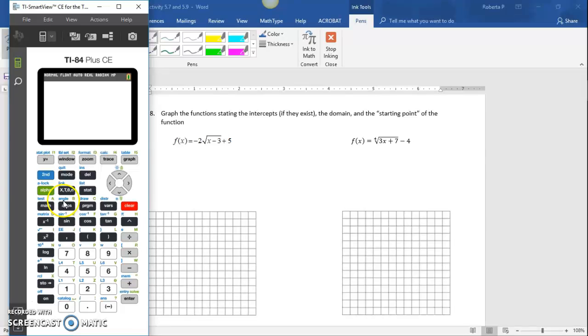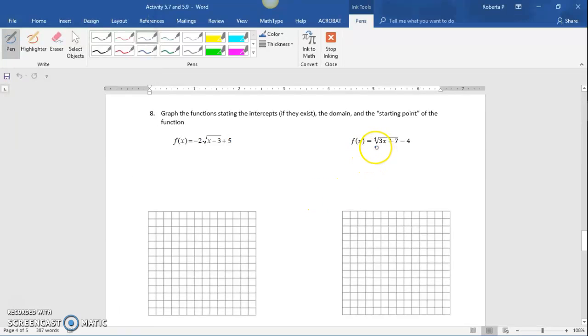If you're using a TI-84 graphing calculator, go to y equals. Recall that anytime we're using a root, we have to rewrite this as 3x plus 7 raised to the 1/4th power minus 4, since our calculator doesn't handle fourth roots directly.